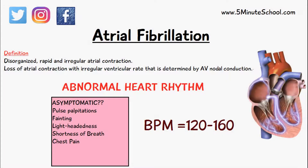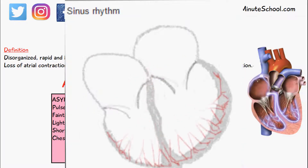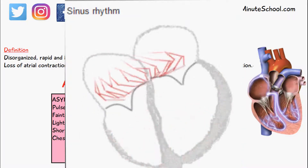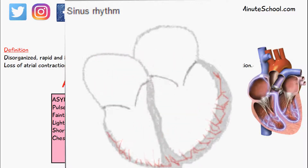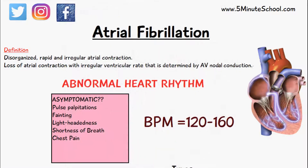In today's video I want to briefly talk about atrial fibrillation. The definition of atrial fibrillation is where we have disorganized, rapid, and very irregular atrial contraction. Looking at the structure of the heart, we have two atria and two ventricles. Normally, the sinoatrial node initiates an electrical current that spreads evenly throughout the atria, causing them to contract, followed by a signal from the atrioventricular node.